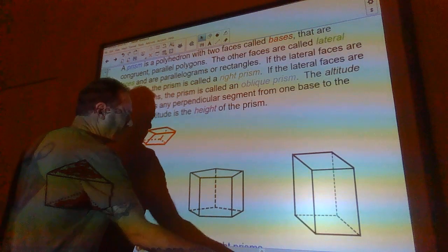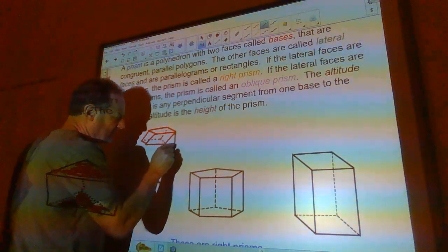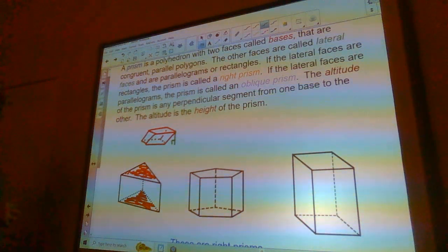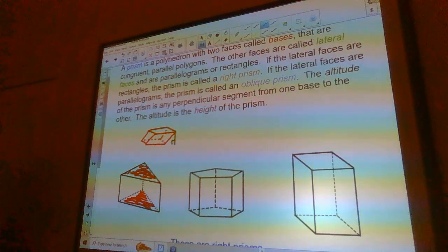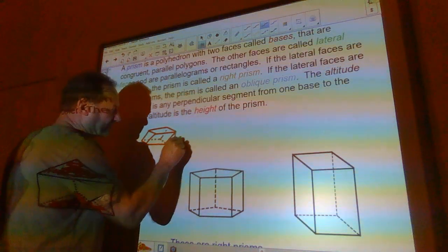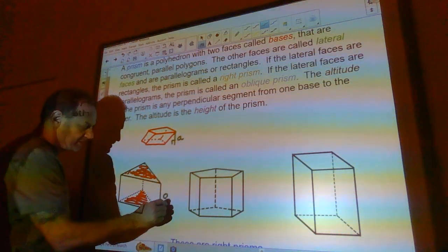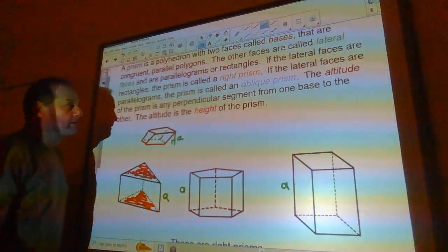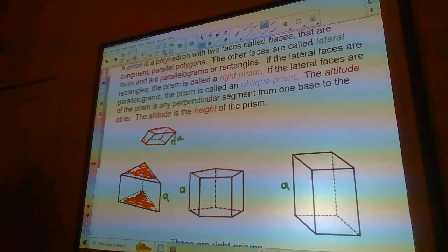It would have a 90-degree angle out here. If the lateral face of parallelogram is called an oblique prism, the altitude of a prism is any perpendicular segment from one base to the other. So this would be the altitude A right here. These would be altitudes here, here, and here. The altitude is the height of the prism.